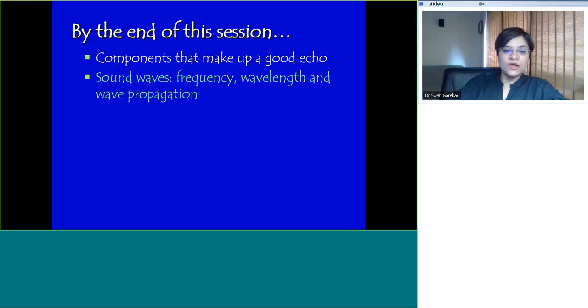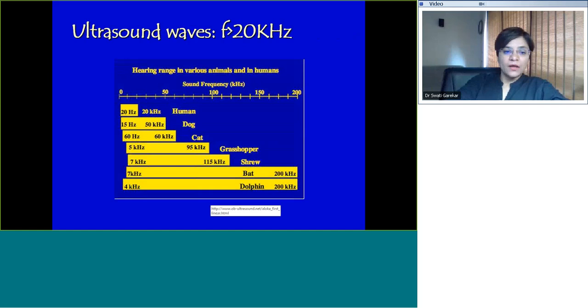Let's move on to some physics now. We'll look at sound waves. This is a table showing the frequency of sound, the range. For example, humans have a hearing range of around 0 to 20 kilohertz, while a dog is much higher. A dolphin can hear sound up to a frequency of 200 kilohertz. What is ultrasound? Ultrasound is something that the human cannot hear. Anything above 20 kilohertz is ultrasonic sound waves.